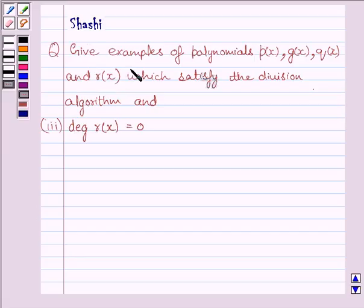Give examples of polynomials Px, Gx, Qx and Rx which satisfy the division algorithm and degree of Rx is equal to 0.